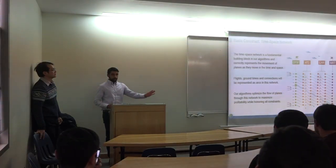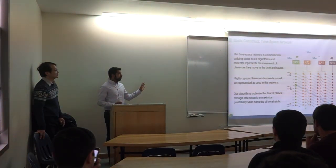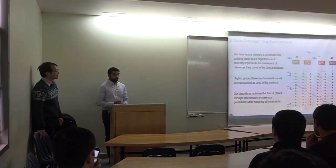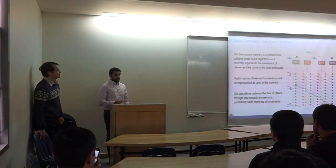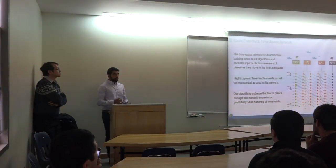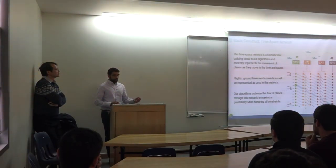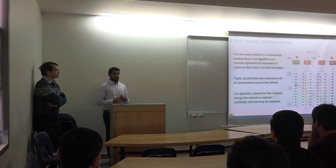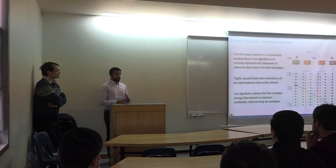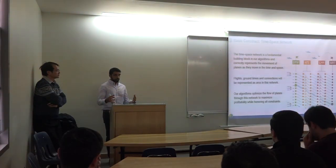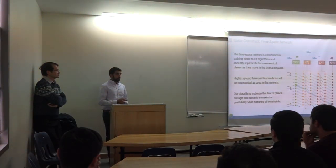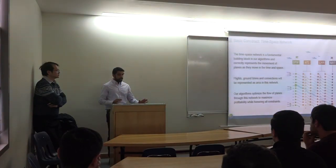The underlying construct behind all of this is a network. We're all about networks. The underlying network we use is a time-space network. The nodes will be planes in certain cities at certain times, and we use arcs to denote flights, ground time at a gate, and passenger connections. The goal is to optimize the flow through this network, ensuring that you're honoring all of your operational constraints.